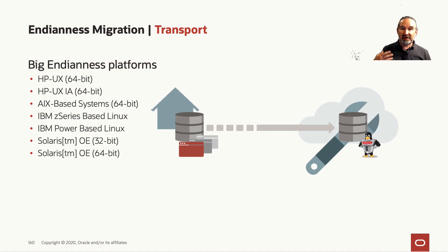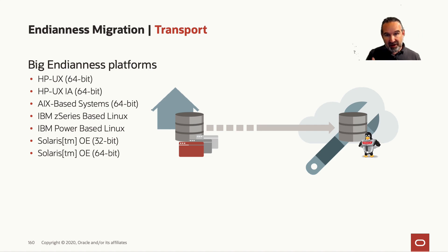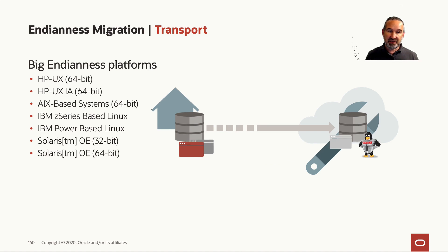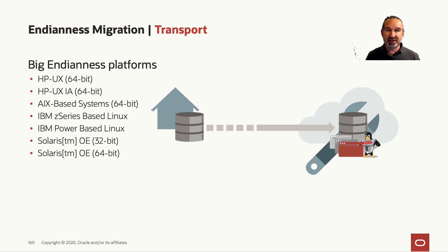If you have a big Endian platform — like HP, AIX, IBM, ZLinux, Power-based Linux, or SPARC Solaris — on-prem, it needs to be migrated over. We take the tablespaces, set them read-only, copy them, and as we go across Endianness, we convert them and then do the extra steps for transportable tablespaces.